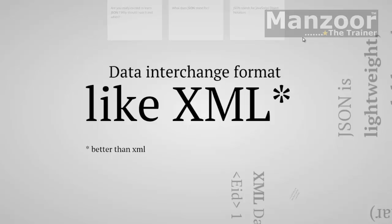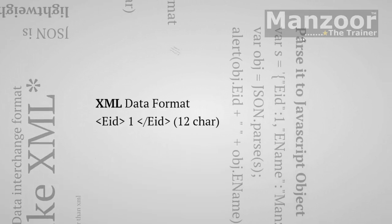JSON is used as a data exchange format, like XML — but JSON is better than XML. Why? Let us see. If I want to display an employee ID in XML, I use an open tag, then the value one, then a close tag. If you count, there are 12 characters involved to represent that employee ID.